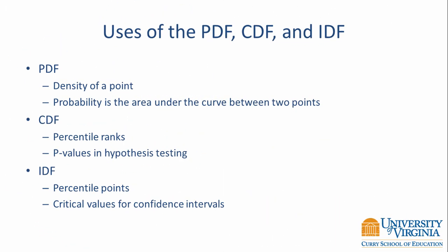The normal probability density function is the symmetric bell-shaped function that most people think about when they refer to the normal distribution or the normal curve. We use the PDF to obtain the density of a point. We also use it to compute probability as the area under the curve between two points.